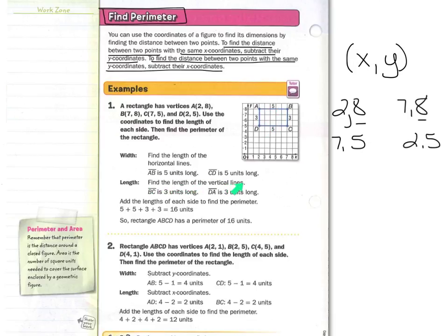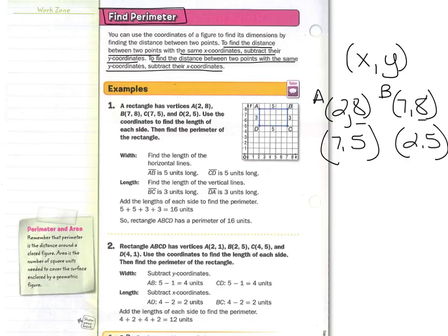To find the length of the vertical lines — those would be AD and BC — you subtract their y-coordinates. Point A is 2, 8. B is 7, 8. D is 7, 5. And C is 2, 5. If we are looking for BC, they have the same x-coordinates, so we would subtract the y-coordinates. Same for DA — they have the same x-coordinates, so we subtract the y-coordinates and we get 3.